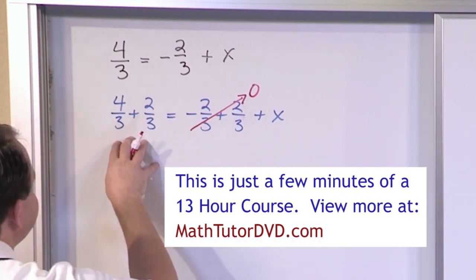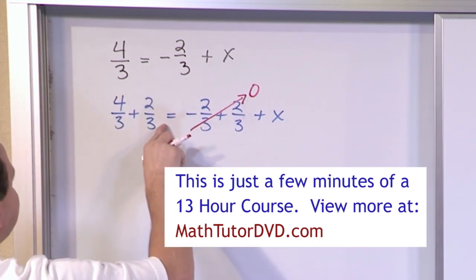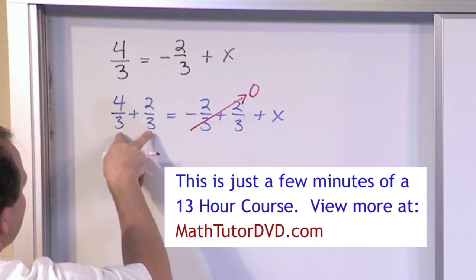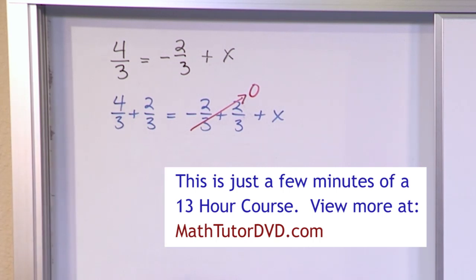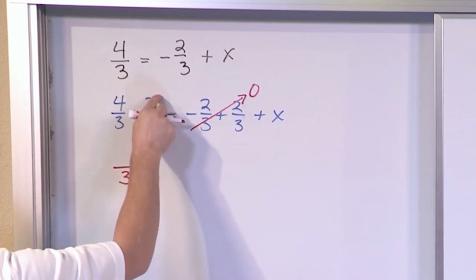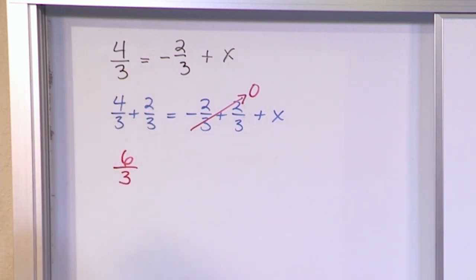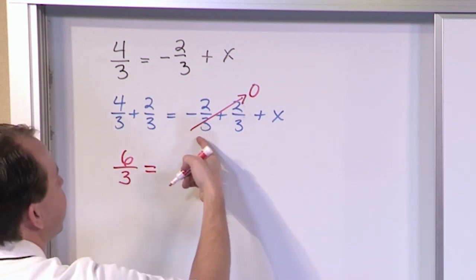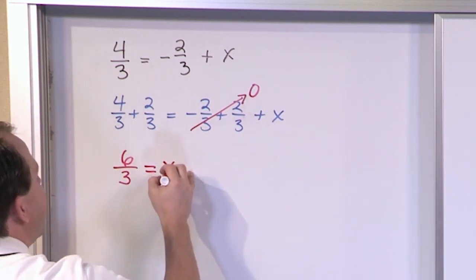So what I have here on the left hand side, I've got two fractions that I need to add together. Fortunately, the common denominator is already here. I've already got a 3. So I keep the common denominator. I add the numerators. I get 6 thirds on the left. And that's all from fraction arithmetic. On the right hand side, this goes away. And I have x.